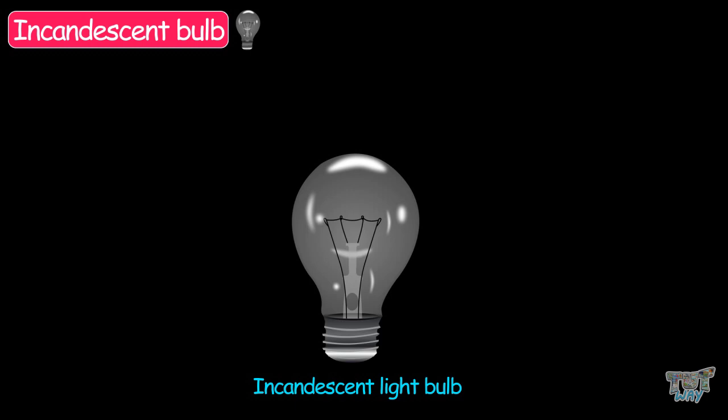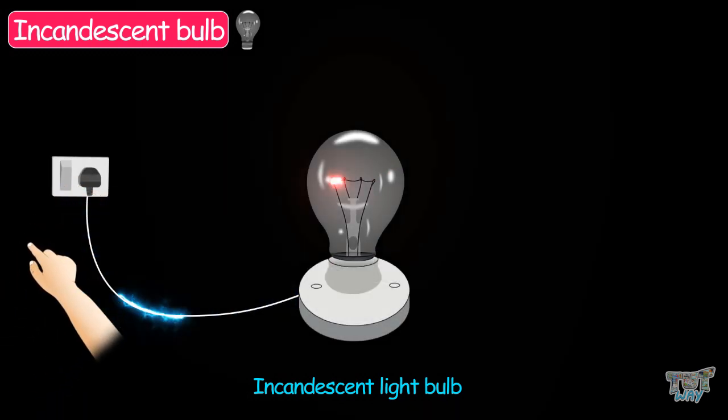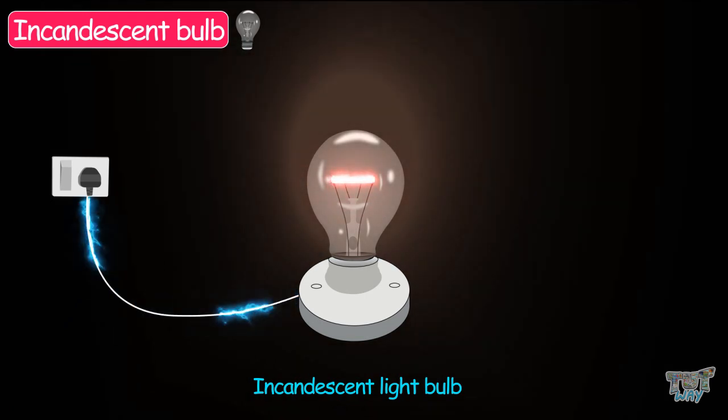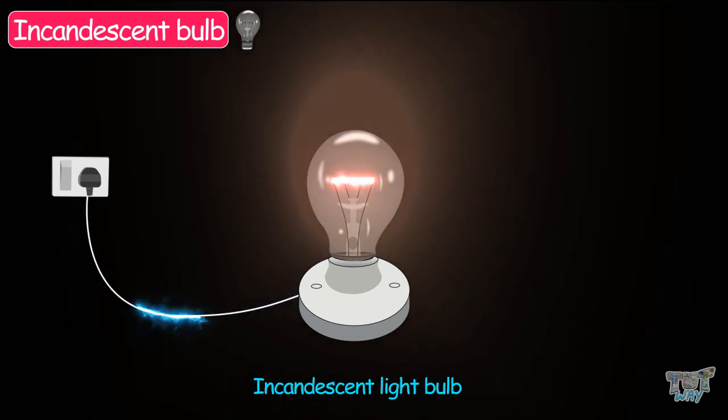This bulb consists of a thin filament made up of tungsten, which is connected to the positive and negative terminal of the bulb. When the electric energy is provided to the terminals, electricity flows through the tungsten filament.